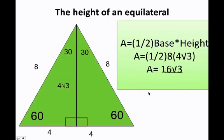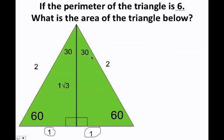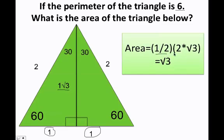Let's go ahead and do another one. They tell me: if the perimeter of the triangle is 6, what is the area? So 6 divided by 3 is going to be 2, giving each side a value of 2, and half of that is 1. I draw my altitude here, so this half is 1 and this half is 1. If x is equal to 1, therefore x times the square root of 3 must be 1 times the square root of 3. Now my area is 1 half times 2 times the square root of 3. Since 1 times the square root of 3 is just the square root of 3, the area of this triangle is the square root of 3.